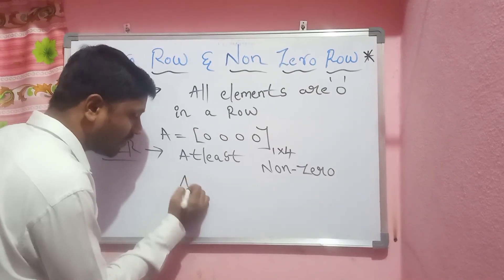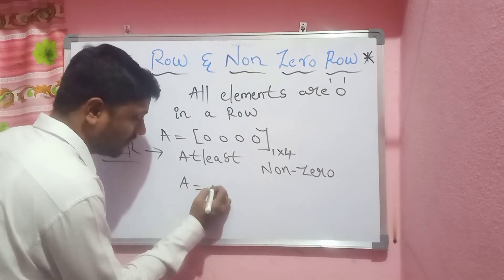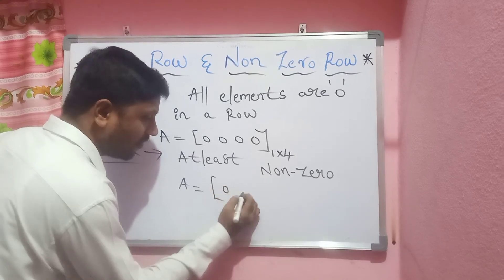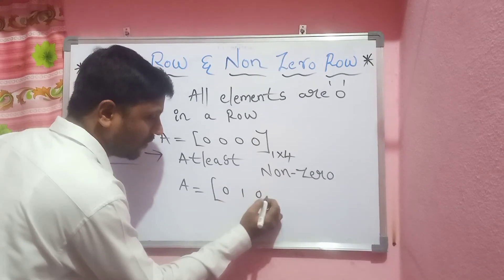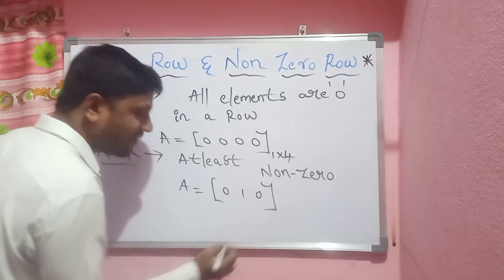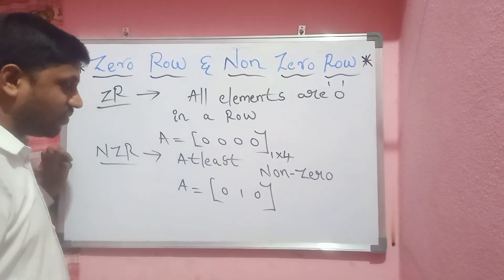For example, capital A is equal to [0, 1, 0]. So this is a non-zero-row, because at least one element is a non-zero element.